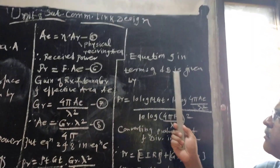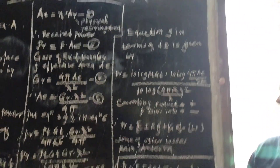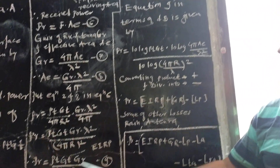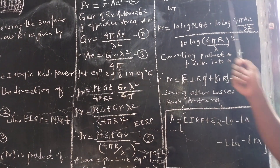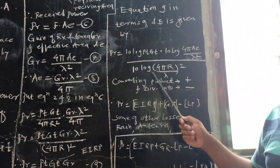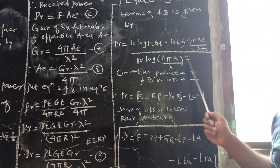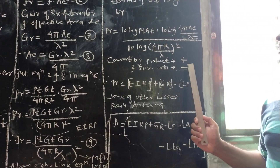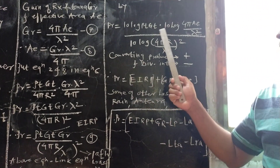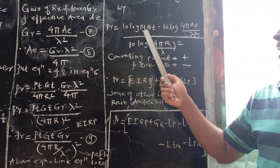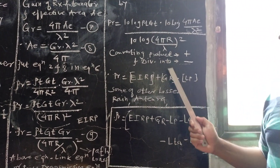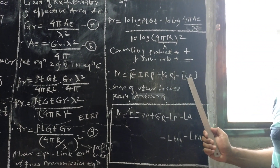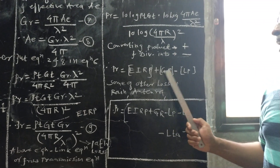Equation 9 in terms of dB is derived as follows. Converting products to sums and division to subtraction in the logarithmic form: PR = 10·log(PT·GT) + 10·log(GR) − 10·log(4πR/λ)². Here, 10·log(GR) = 10·log(4π·AE/λ²), and the path loss term is 10·log(4πR/λ)². Therefore, we get the equation: PR = EIRP + GR − LP (all in dB).